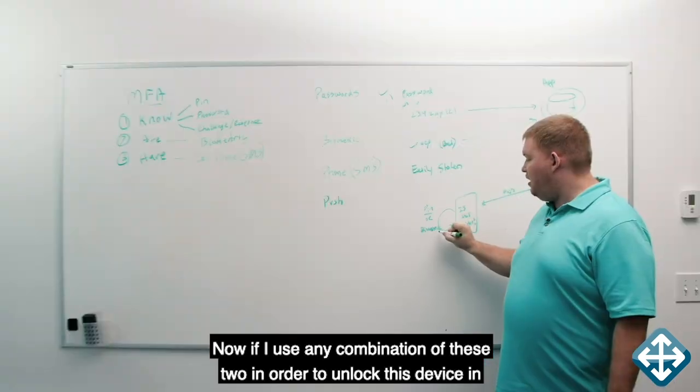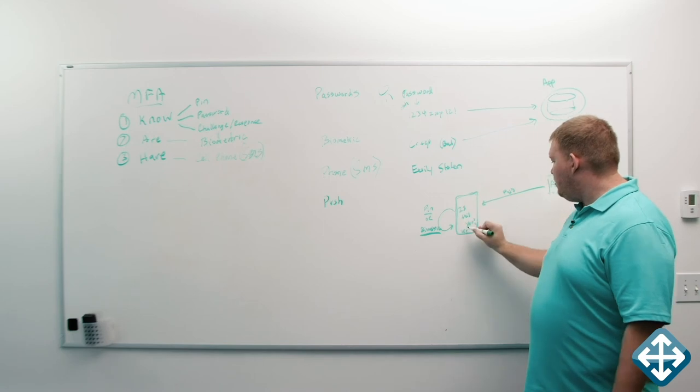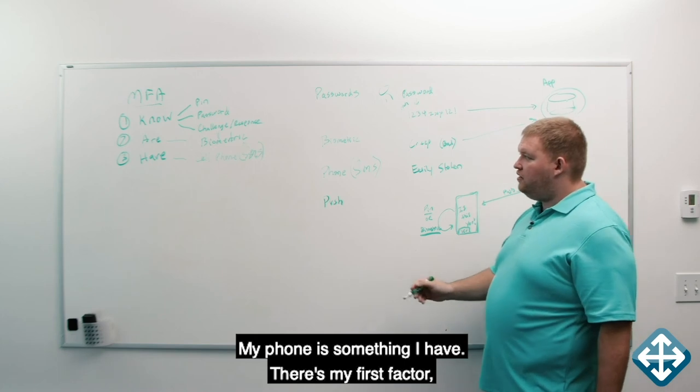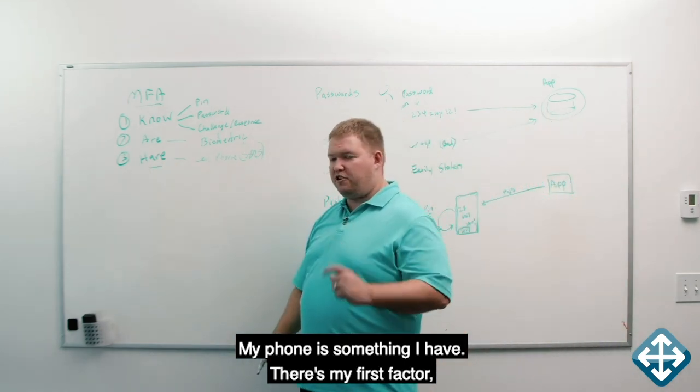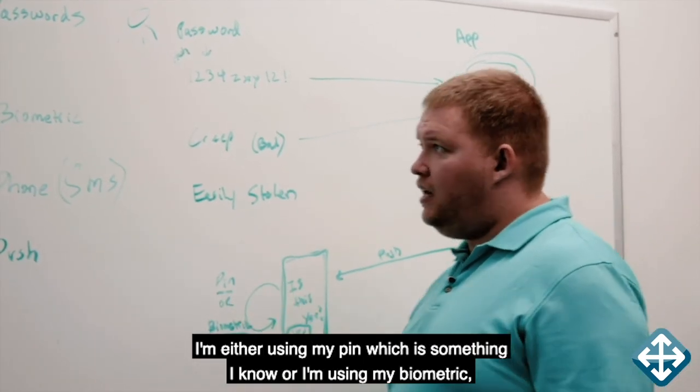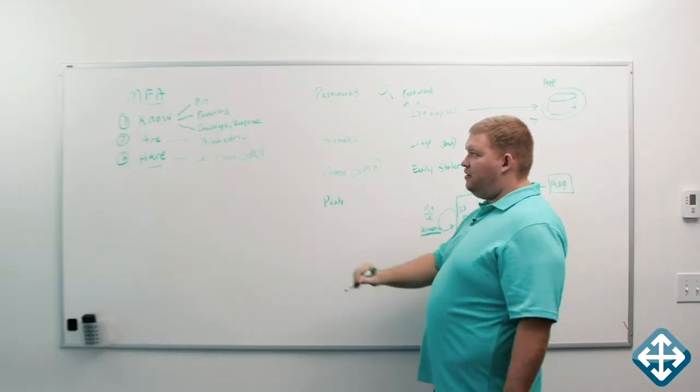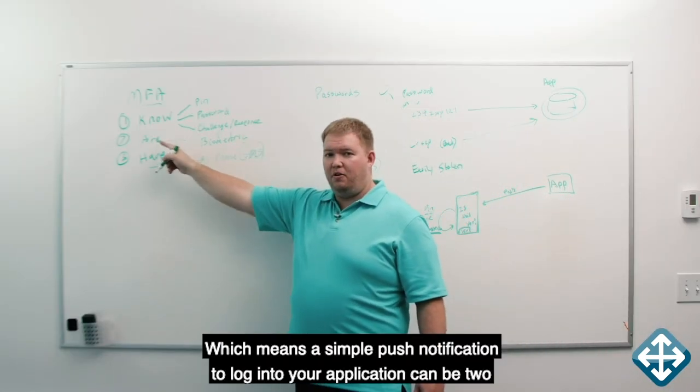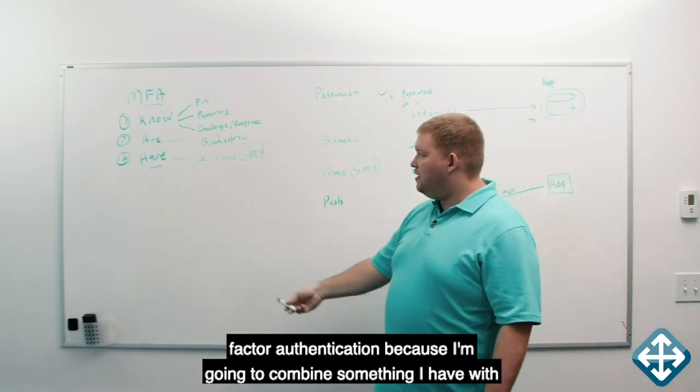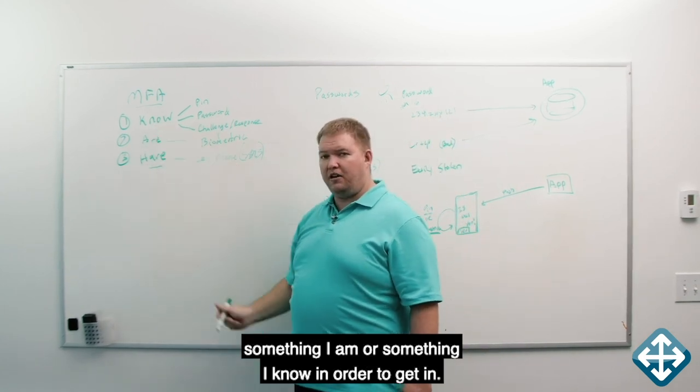Now, if I use any combination of these two in order to unlock this device, in order to hit yes and answer your challenge, what have we just done? My phone is something I have. There's my first factor. And then in order to unlock the phone to answer the challenge, I'm either using my pin, which is something I know, or I'm using my biometric, which is something I am, which means a simple push notification to log into your application can be two-factor authentication because I'm going to combine something I have with something I am, or something I know in order to get in.